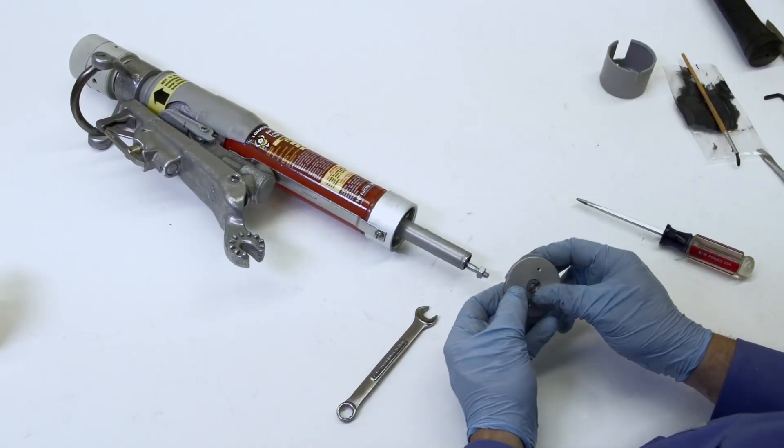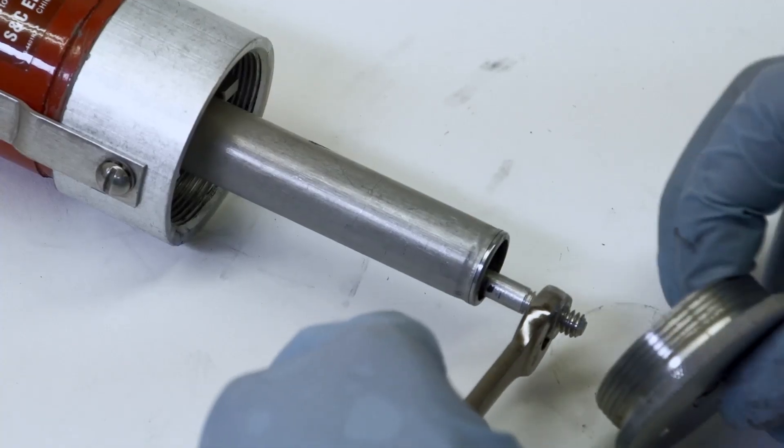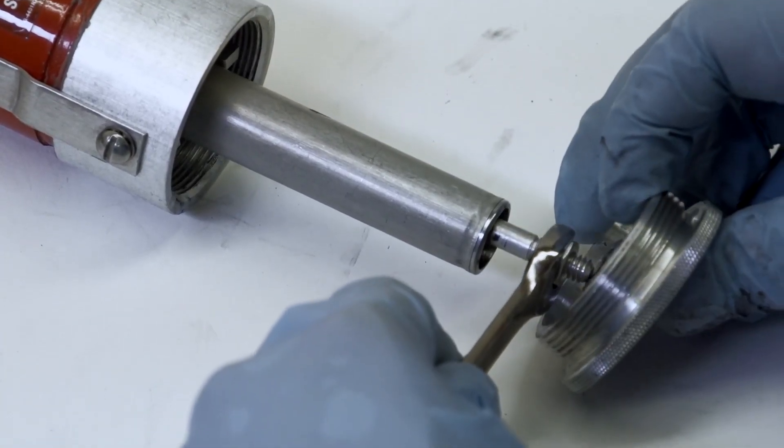Position the end cap and secure it to the moving contact assembly using the retaining screw and set screw. Tighten the set screw last.